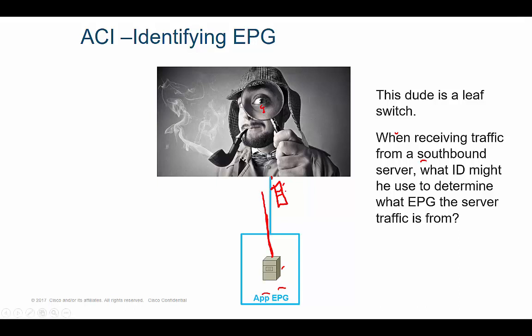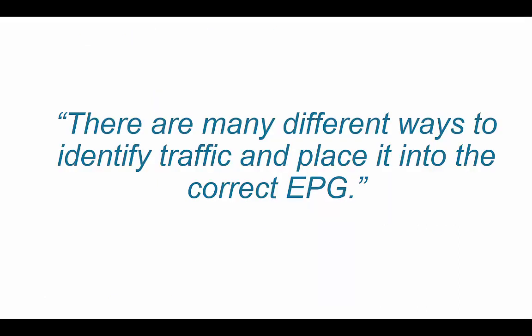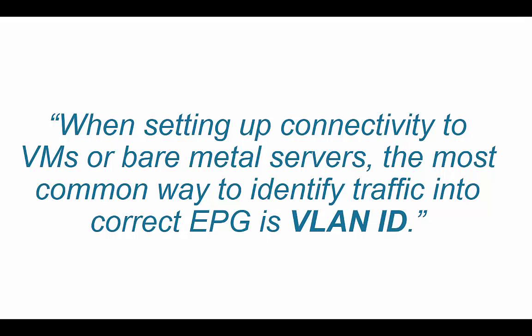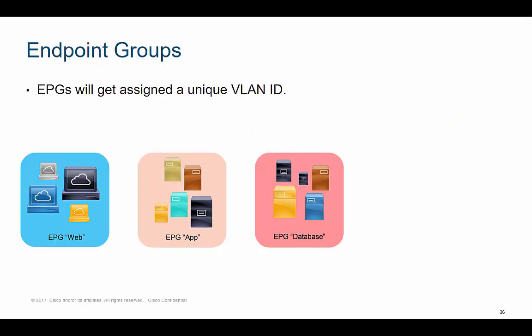Possible answers include source IP, destination IP, source MAC, destination MAC, VLAN ID, or port number — and all those are potentially right. You have a lot of flexibility when identifying traffic into a certain EPG. The most common way to do it is to use the VLAN ID. For example, the web EPG uses VLAN 10 on the wire, so traffic coming in on VLAN 10 gets placed into the web EPG. The app EPG uses VLAN 20, and the database EPG uses VLAN 30.